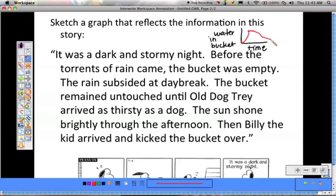Then Billy the kid arrived and he kicked the bucket over. So then we have a steep line right there going down. So there might be a graph to represent the situation.